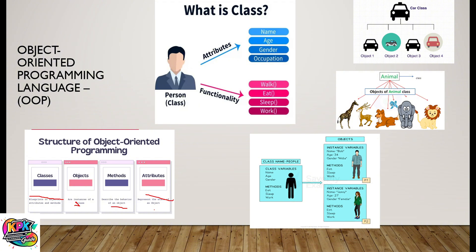Let's look at some examples. A person as a class has what we call attributes. Attributes here could be the name, age, color, and occupation. Then the methods — or what we call functionality — could be working, eating, and sleeping. So an object has attributes and methods or functions.